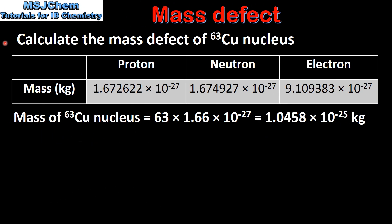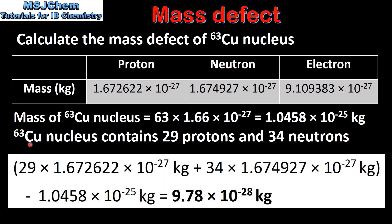In our next example we will calculate the mass defect of a copper-63 nucleus. To calculate the mass of a copper-63 nucleus we multiply the number of nucleons by the mass in kilograms of one nucleon, giving us a mass of 1.0458 × 10⁻²⁵ kg. A copper-63 nucleus contains 29 protons and 34 neutrons. To calculate the mass defect we multiply the mass of a proton by 29 and add that to 34 times the mass of a neutron, then subtract the mass of the copper-63 nucleus to give us 9.78 × 10⁻²⁸ kg.